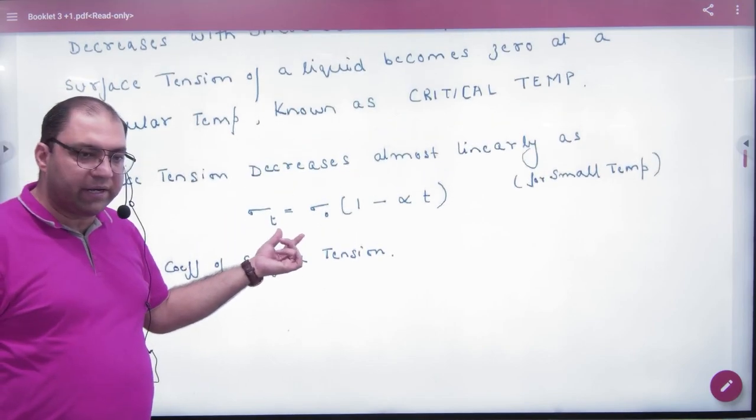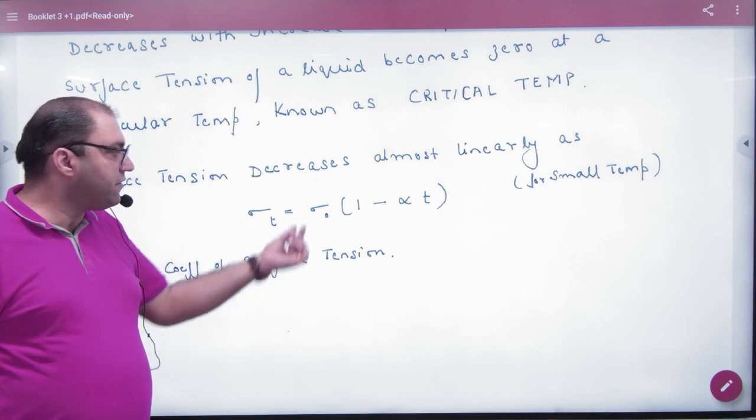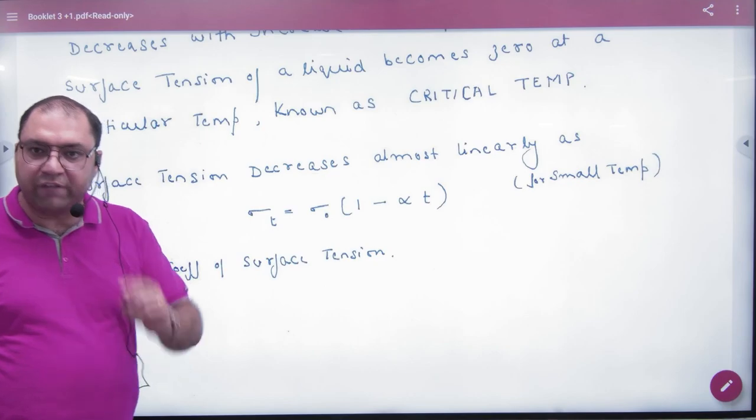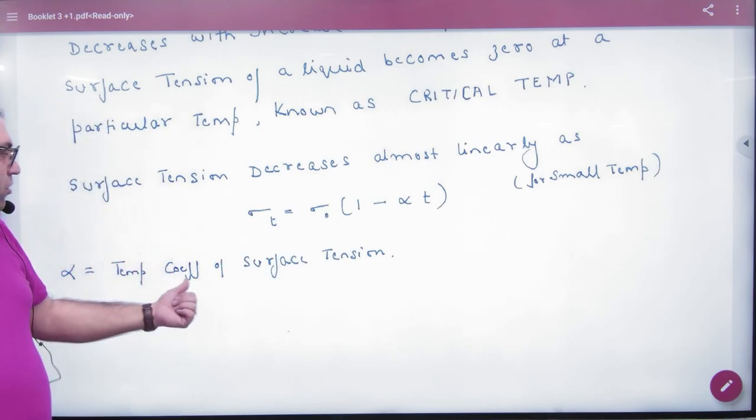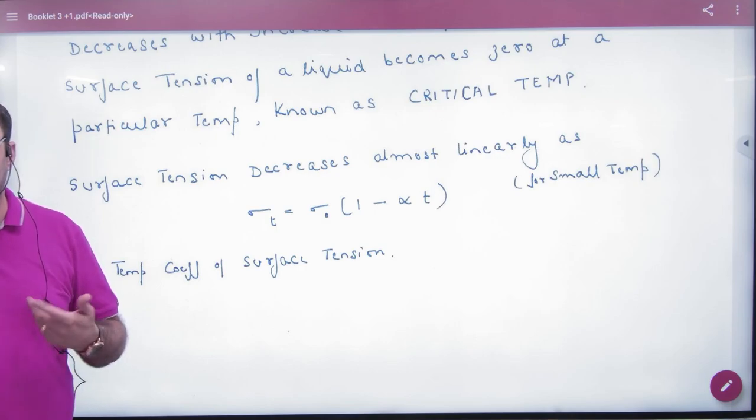Surface tension decreases almost linearly as σ_t = σ_0(1 - α×t), where σ_t is surface tension at t degrees Celsius, σ_0 is surface tension at 0 degrees Celsius, t is the change in temperature, and α is the temperature coefficient of surface tension, like thermal expansion.